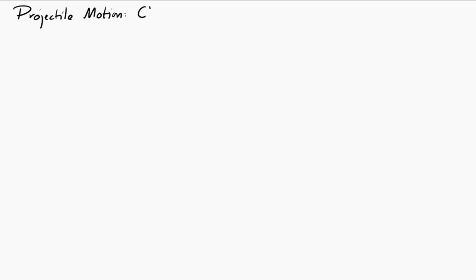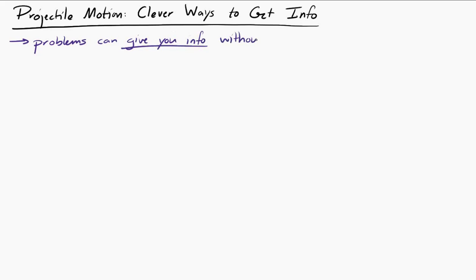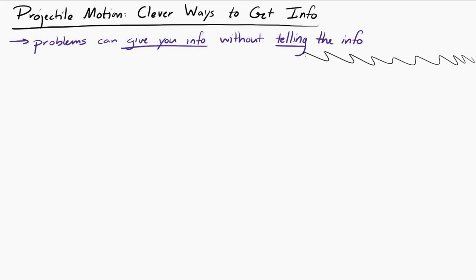Let's take a look at projectile motion part 3: clever ways to get information out of a problem. The idea is I'm going to show you a few different ways that physics problems often give you information without explicitly telling you, or ways that a problem can ask a question and you have to supply some background in order to solve it.